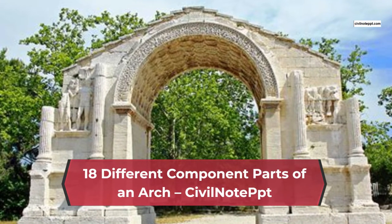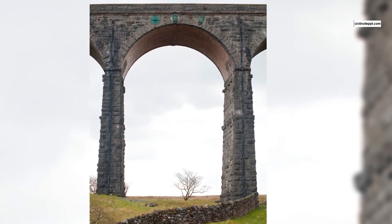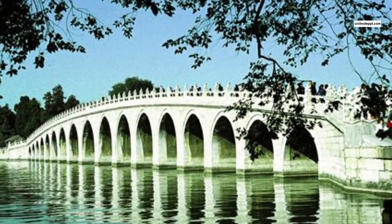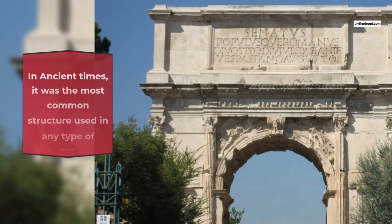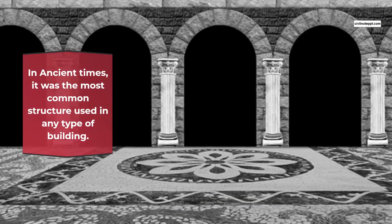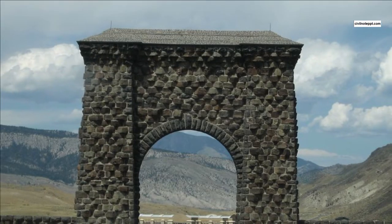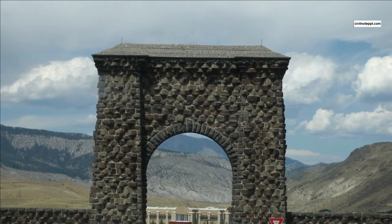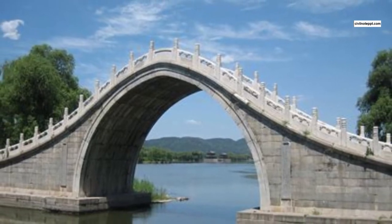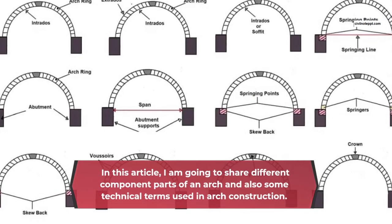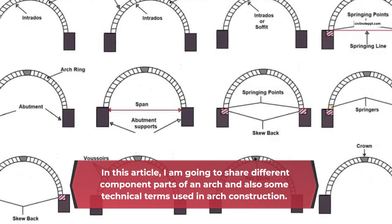18 Different Component Parts of an Arch. An arch is the structure that is constructed over the opening of windows, doors, or cupboards, etc. The arch structure is also used in bridge construction. In ancient times, it was the most common structure used in any type of building. An arch may be circular, elliptical, or any other shape. It consists of wedge-shaped blocks of stone, bricks, etc. It may be made of steel or RCC in the case of bridge construction.